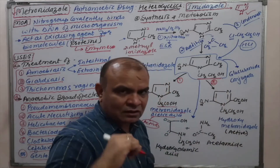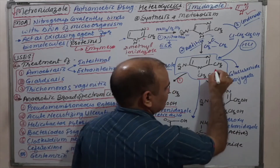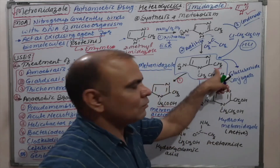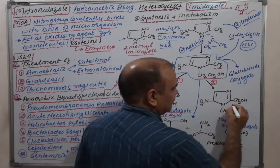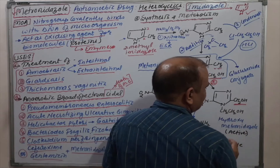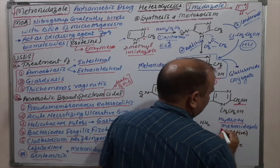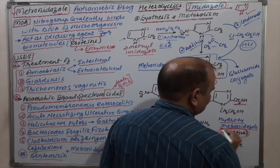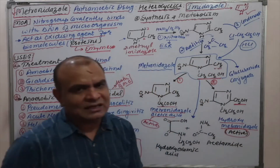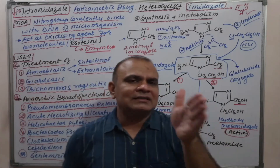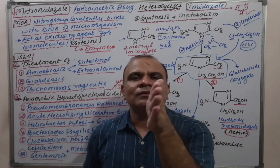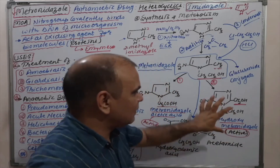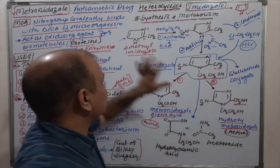In the second pathway, there is oxidation of the methyl group. The methyl group is converted to a hydroxymethyl group, giving hydroxy-metronidazole, which is again an active metabolite — it gives similar effects as metronidazole.